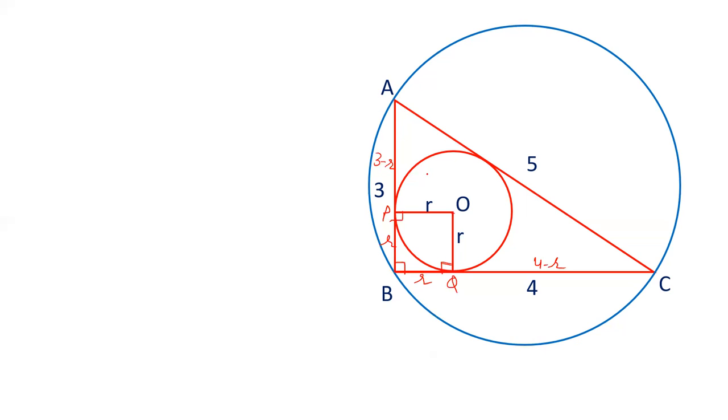There is a property. There is a property in circle: tangent drawn from an external point are equal. AP and AR are equal because they are tangent from an external point. So this AR is 3 minus r.